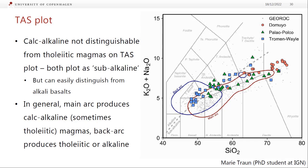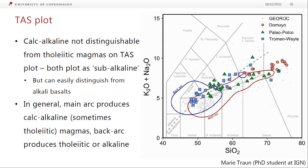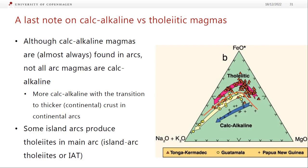Calc-alkaline magmas are almost always found in arcs, but not all arc magmas are calc-alkaline. We're more likely to get calc-alkaline magmas where we have thicker crust in the overriding plate — so basically continental arcs. In some island arcs with thinner crust you can actually get tholeiites — referred to as island arc tholeiites — in the main arc. The thicker the crust, the more likely you are to get calc-alkaline magmas.